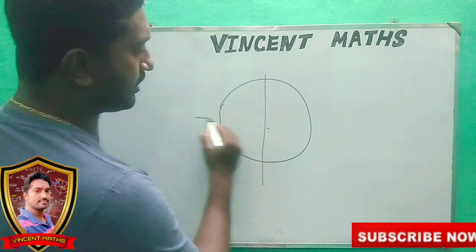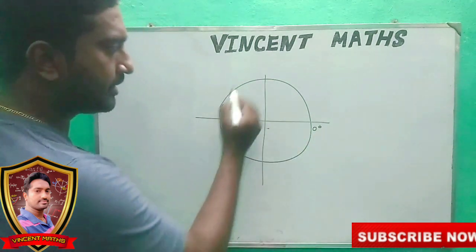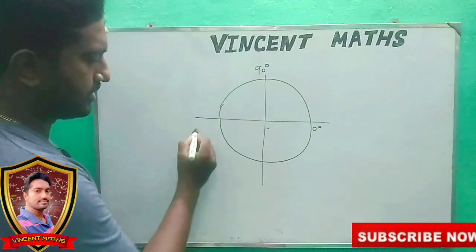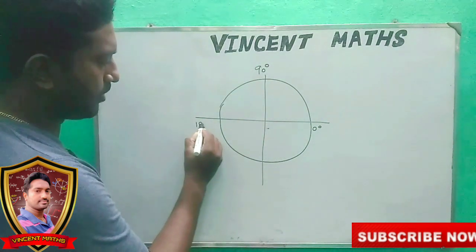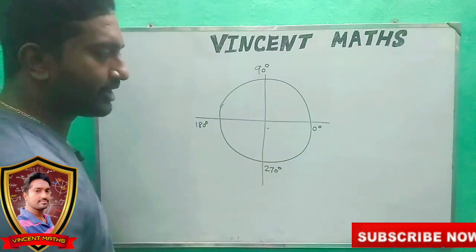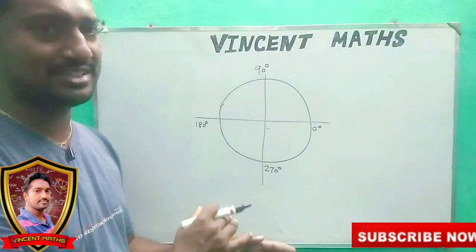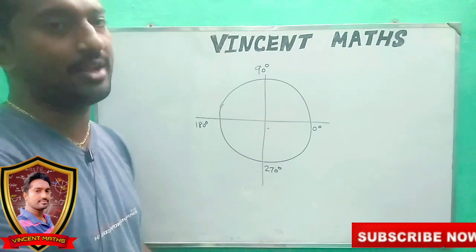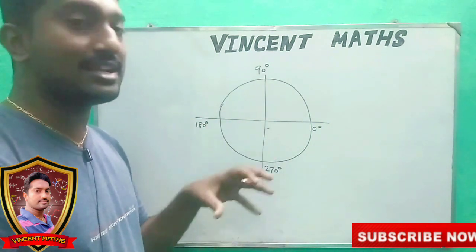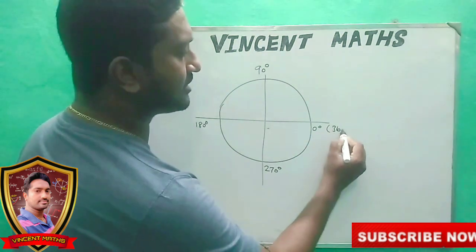Let's take a circle. In this circle, let's take 0 degrees, 90 degrees, 180 degrees, and 270 degrees. Let's say 180 plus theta and 180 minus theta, and let's identify where we are. At the 0 position, let's also take 360 degrees.